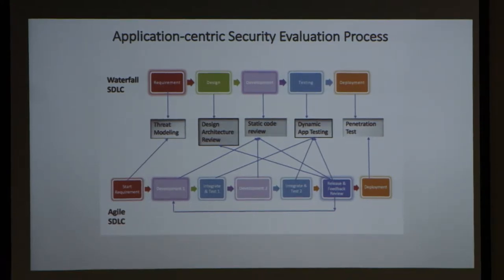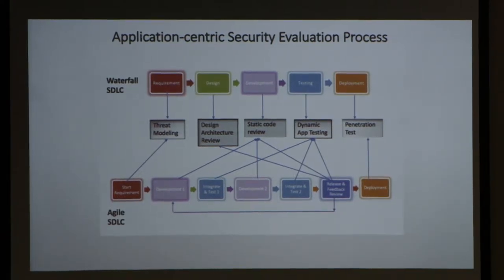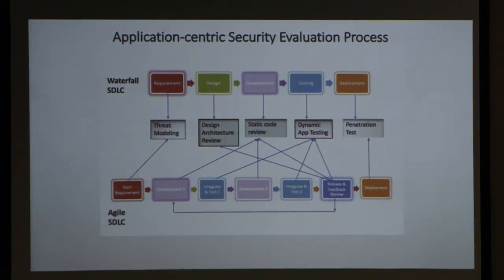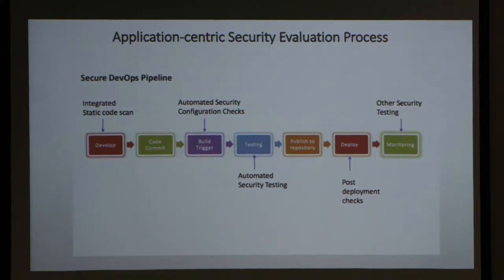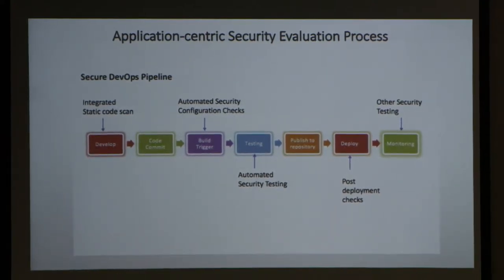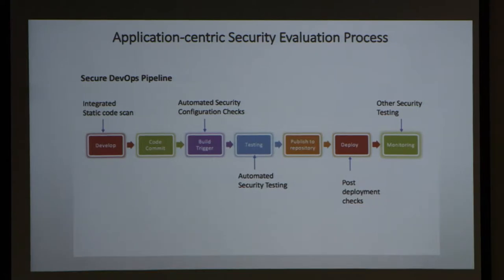If we could empower our developers with the right tools, technology, and methodology, they can do their level best. In a secure DevOps pipeline, we try to replace manual steps with automation as much as possible — that's how we scale. For every single build we do a static code scan, automated configuration checks, and dynamic scanning every once in a while.